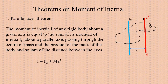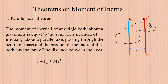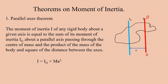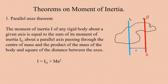Suppose Ig is the moment of inertia about the parallel axis passing through the center of mass. Then the moment of inertia of the body about any parallel axis AB is given as I = Ig + MS², where M is the total mass of the body and S is the distance between the two parallel axes.